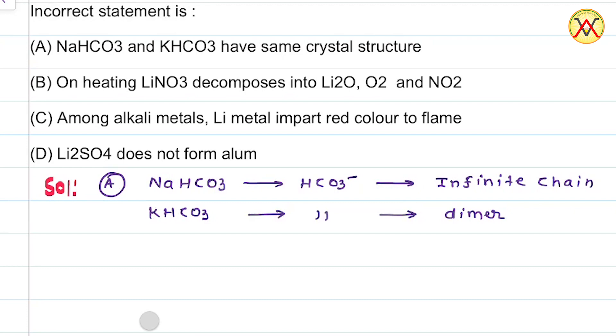As the existence of bicarbonate in NaHCO3 and KHCO3 is different, they must have different lattices. So we can say they have different crystalline structures. Therefore, option A is incorrect.